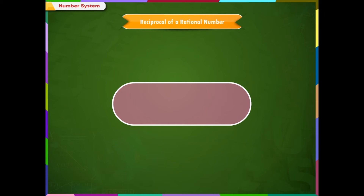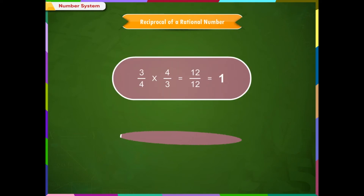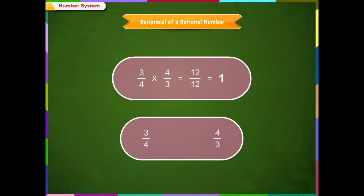Reciprocal of a Rational Number. By the term reciprocal of a rational number, we mean a rational number whose product with the given rational number is 1. In other words, we can say that if the product of two rational numbers is 1, then each of the two rational numbers is called the reciprocal of the other.